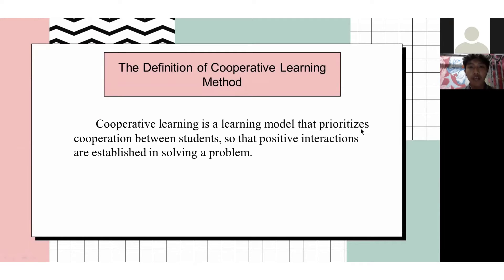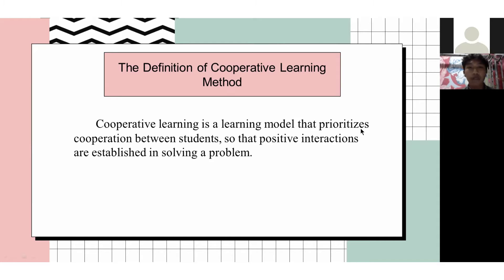The first slide we will discuss about the definition of cooperative learning. So what is the definition of cooperative learning? Cooperative learning is a learning model that prioritizes cooperation between students so that positive interactions are established in solving a problem.